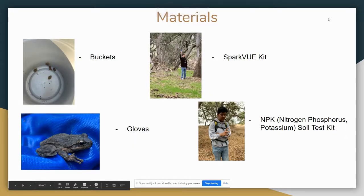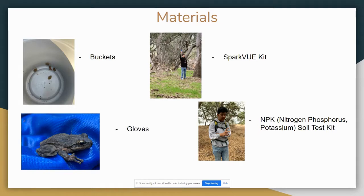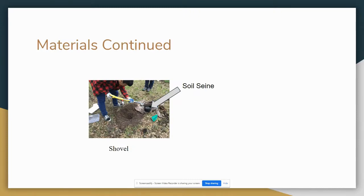Materials: Buckets were used to transfer water from the guzzler to the coverboard and also to collect frogs for a short period of time. The SPARC kit was used to take metadata. Gloves were used to protect the amphibians and ourselves when collecting them. The NPK soil test kit was used to measure nitrogen, phosphorus, and potassium in the soil. A shovel and a soil sieve were also used to get fine soil.